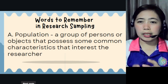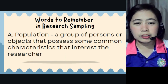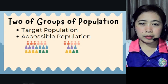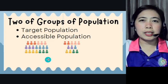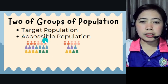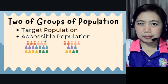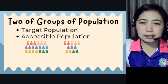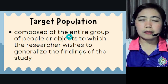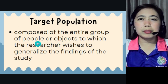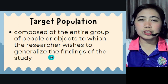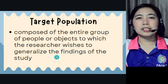The population — again, a group of persons, so there are many of them. We have two groups of population: target population and accessible population. Target population is composed of the entire group of people or subjects to which the researcher wishes to generalize the findings of the study.